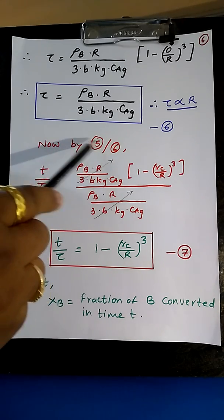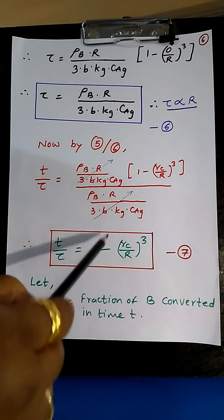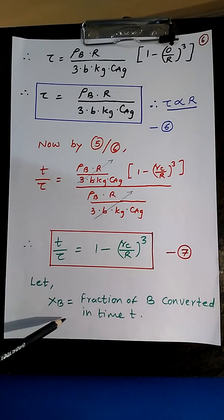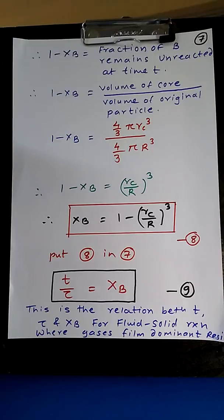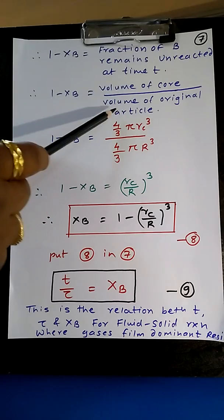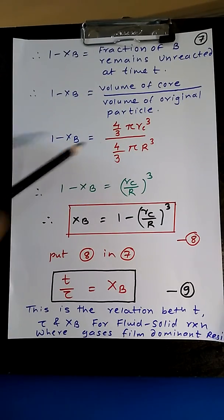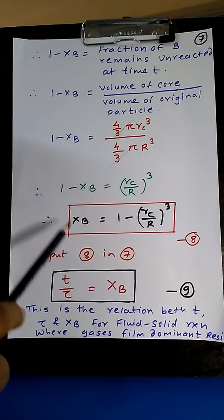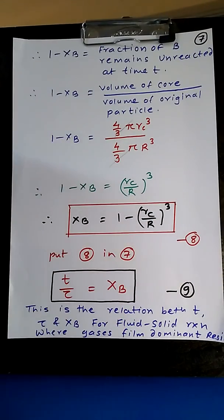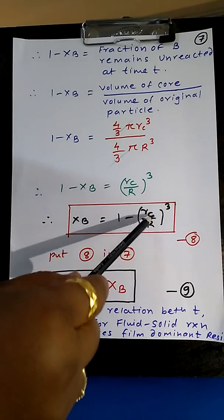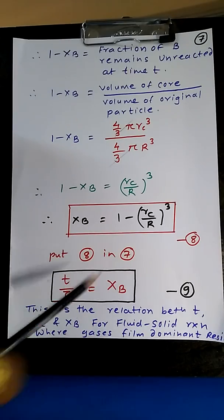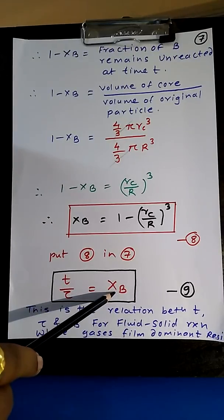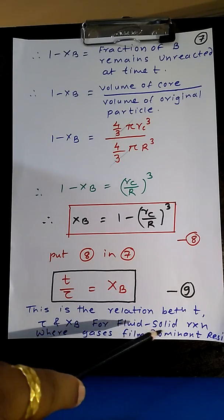Taking the ratio of equation 5 to equation 6, t/τ equals 1 - (Rc/R)³. Now let xB be the fractional conversion of B at time t. Then (1 - xB) is the fraction of B remaining unreacted, equal to the volume of core divided by volume of original particle: (1 - xB) = (4/3 π Rc³) / (4/3 π R³) = (Rc/R)³. Therefore xB = 1 - (Rc/R)³, and substituting back: t/τ = xB. This is the standard relationship between time, total conversion time, and fractional conversion for gas film dominant resistance.